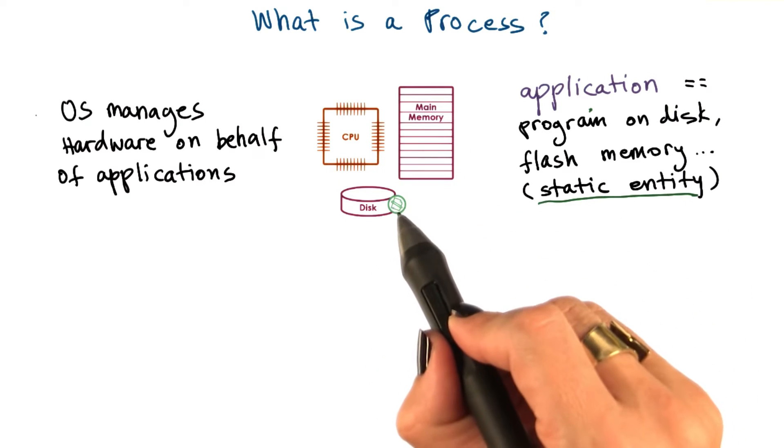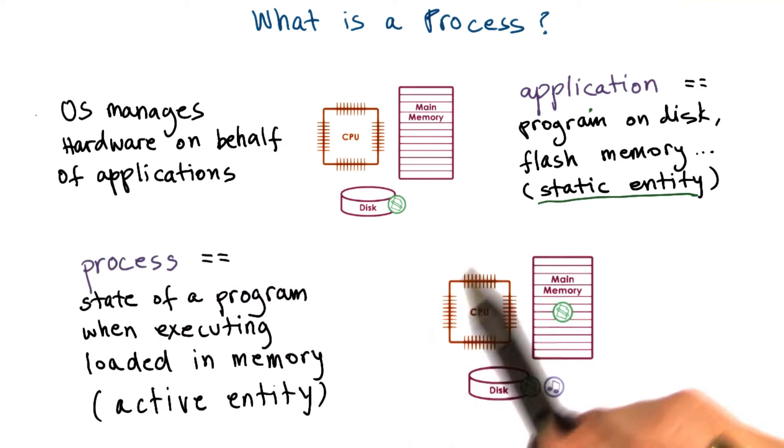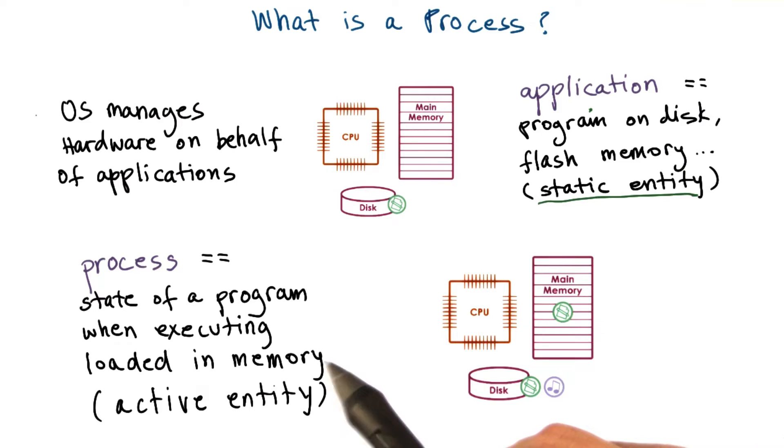Here, for instance, in this picture, we have some application that's stored on disk. Once an application is launched, it's loaded in memory here, and it starts executing. Then it becomes a process. So a process is an active entity.